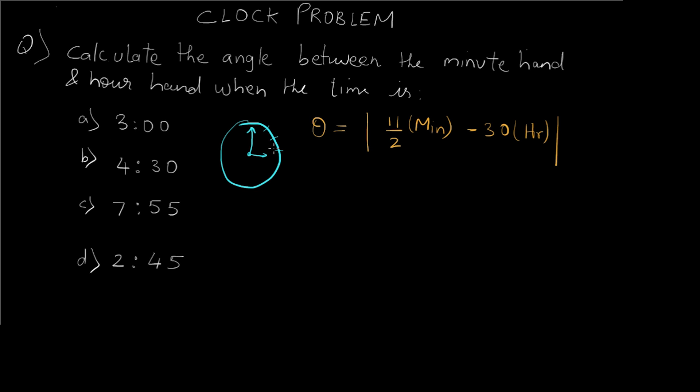So this was a very simple example. Let's see if the formula applies to this one. When the time is 3 o'clock, we know the minutes are zero, so theta equals 11 upon 2 into 0 minus, and the hour hand is at 3, which would give us mod of 0 minus 90, which would ultimately give us 90. So we got the answer as 90 degrees.